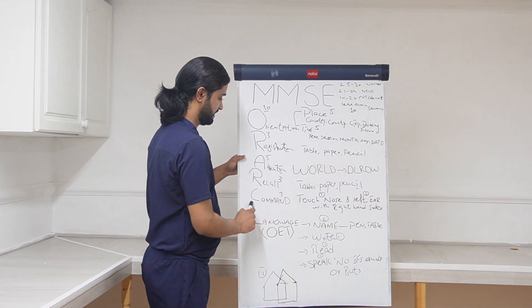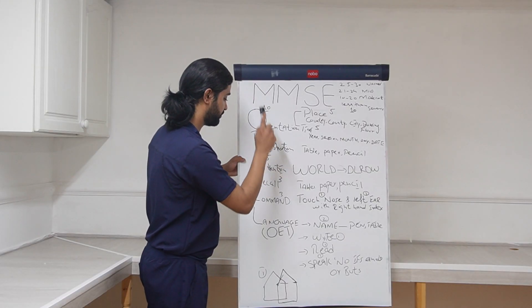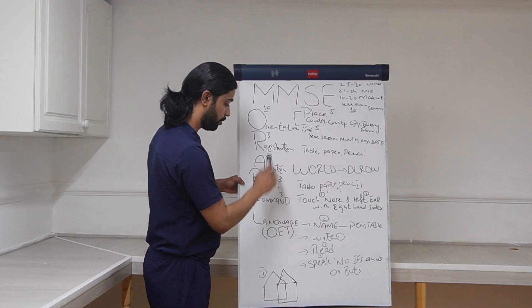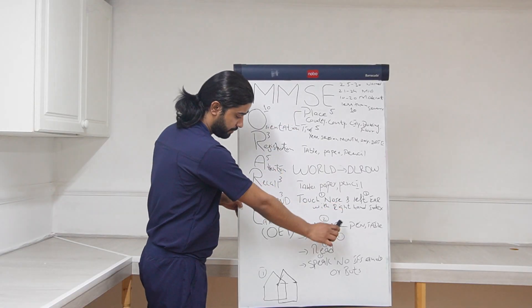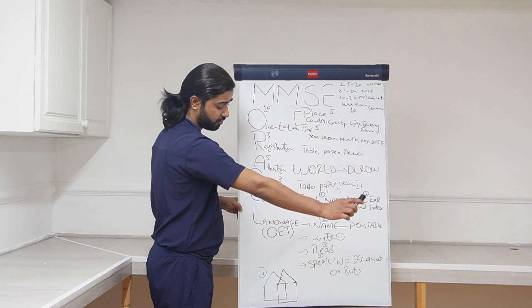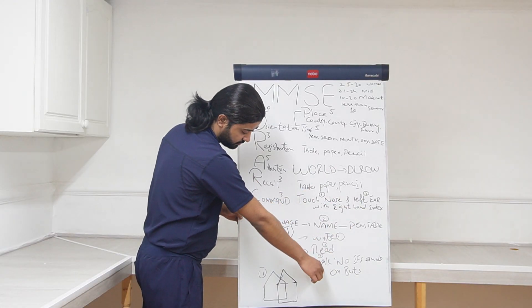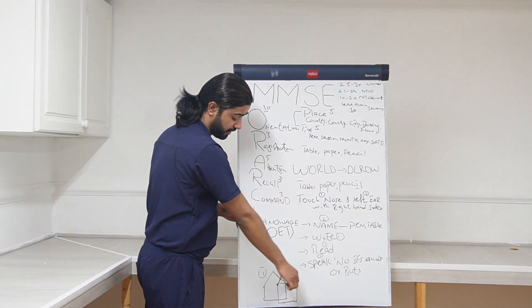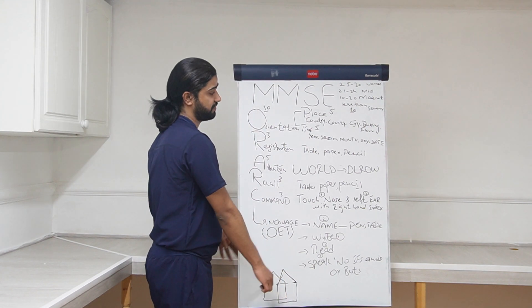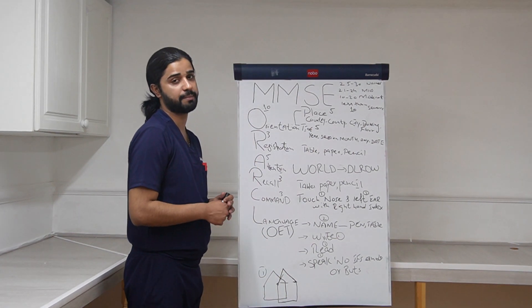So just a quick revision: ORA RCL. Orientation, registration, attention, recall, command, and language. Language has naming objects, writing something meaningful on the paper, reading something you have written on the paper, and then repeating something after you, and drawing this design, copying this design after you. So thank you so much, this is all from MMSE. Thank you.